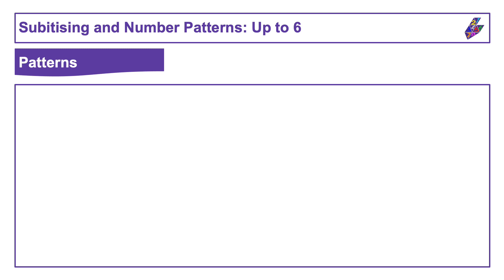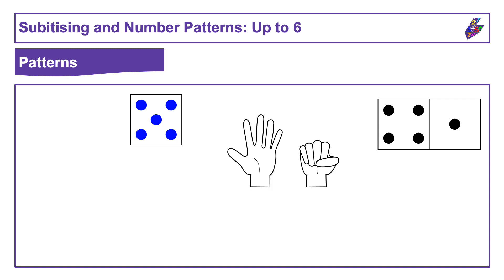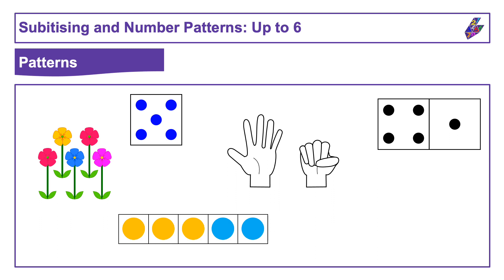We see quantities in different ways all the time in our day-to-day lives. This might be things like dice patterns or domino patterns if we're playing a game. It might be finger patterns when we're looking at our hands, or maybe we spot things in life like flowers and we want to find out how many there are. Or sometimes we see things in the classroom like these dots on a five frame or a shape that looks like this.